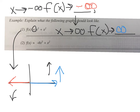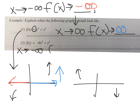For example 2, the leading coefficient is negative, so the two ends flip-flop. As x approaches negative infinity, f of x is going to approach positive infinity. And as x approaches positive infinity, f of x is going to approach negative infinity.